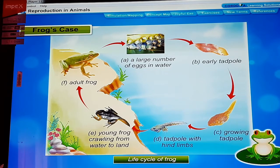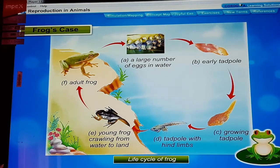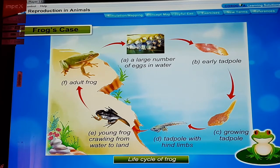The tadpole grows its limbs. After the development of both pairs of limbs, the young frog crawls on to the land. The tail is gradually removed by gradual breakdown and the frog continues to grow until it reaches its adult body size. The transformation of the larva into the adult through drastic changes is called metamorphosis.